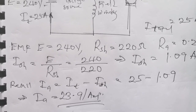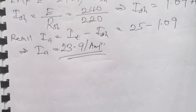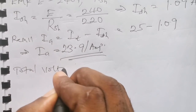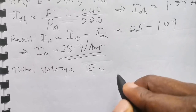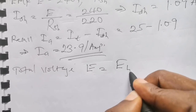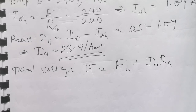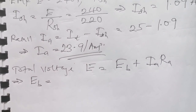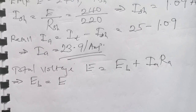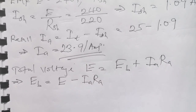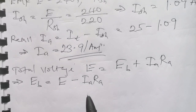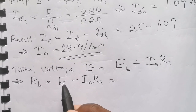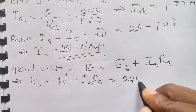The next question asks us to find the back EMF. The total source voltage E is equal to the back EMF Eb plus the armature voltage drop Ia × Ra. Making back EMF the subject: Eb = E − Ia × Ra, where Ra is the armature resistance and Ia is the armature current.